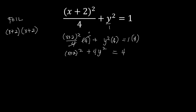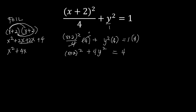Using the FOIL method: first terms, x times x, gives x squared. Outer term, x times 2, gives 2x. Inner term, 2 times x, gives 2x. Last term, 2 times 2, gives 4. Combining the middle terms, we get x squared plus 4x plus 4. This is the result of raising x plus 2 to the power of 2.